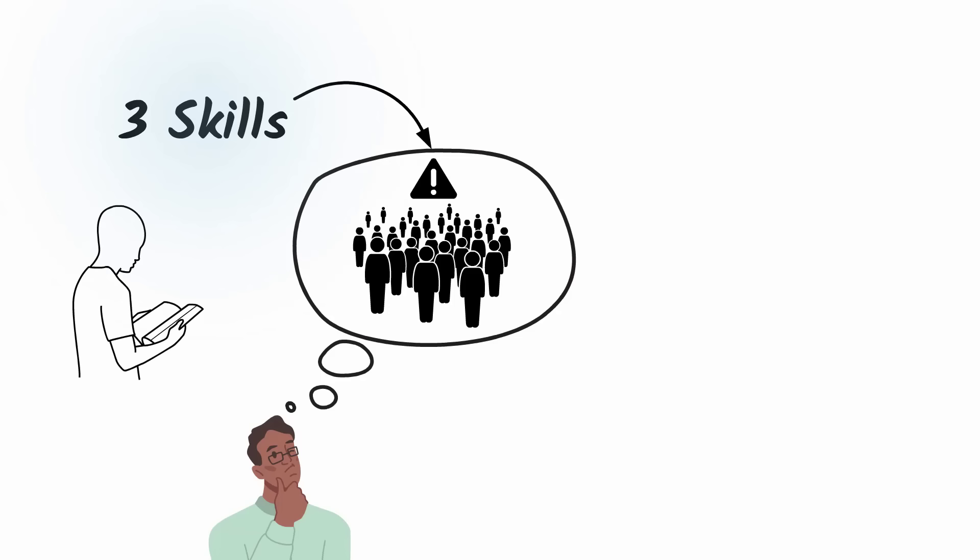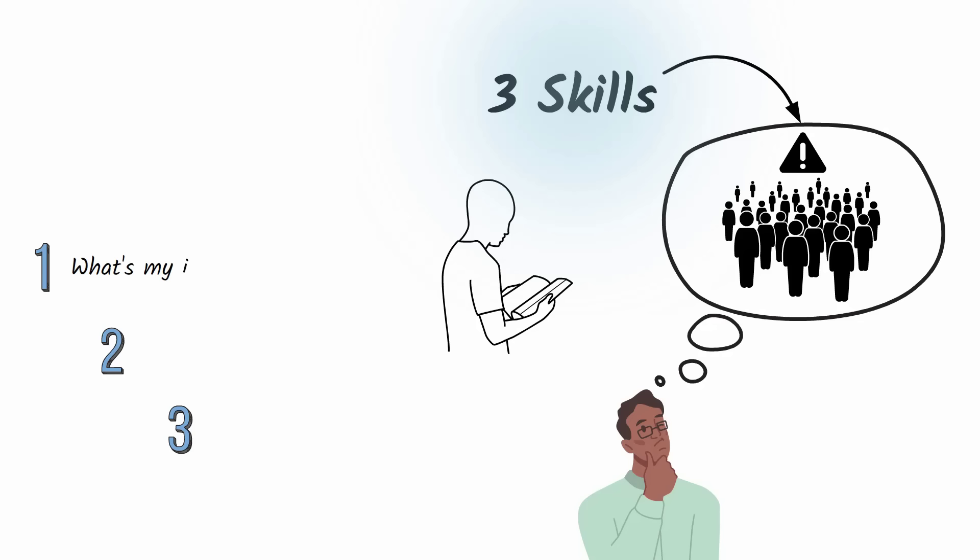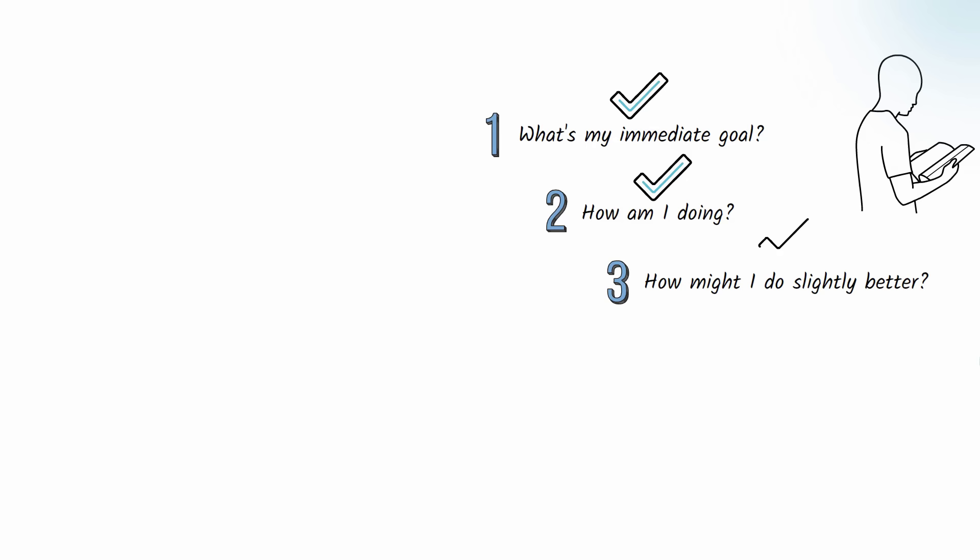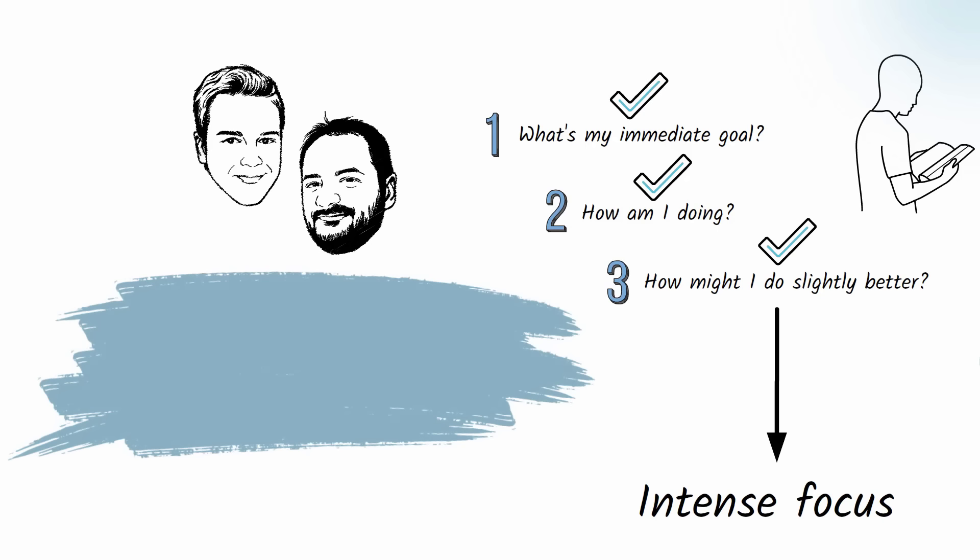Increase your flow by getting crazy clear on three questions. What's my immediate goal? How am I doing? And how might I do slightly better? Once you have answers to those three questions, focus intensely on your actions. Garcia and Mirias say concentrating on one thing at a time may be the single most important factor in achieving flow.